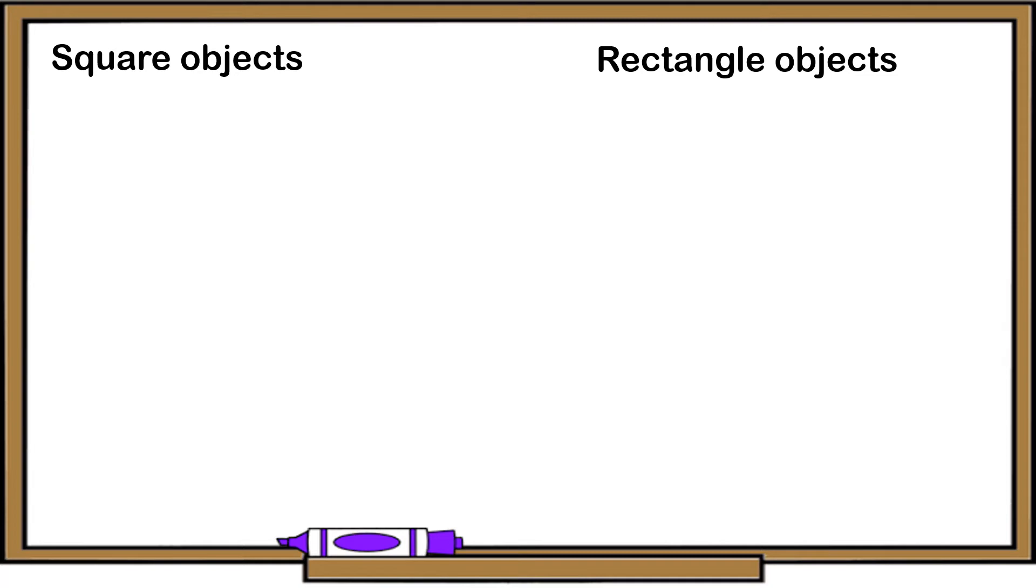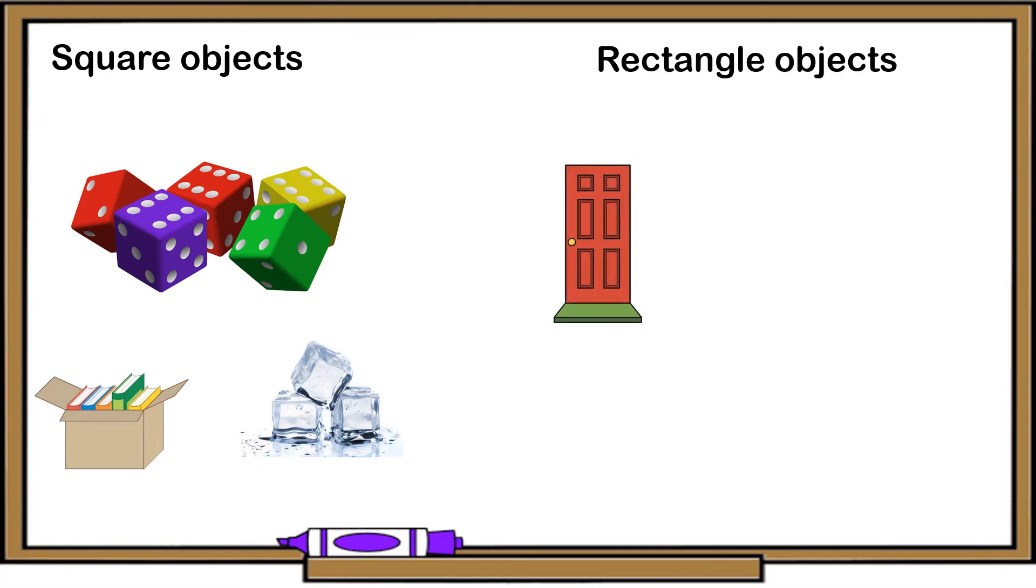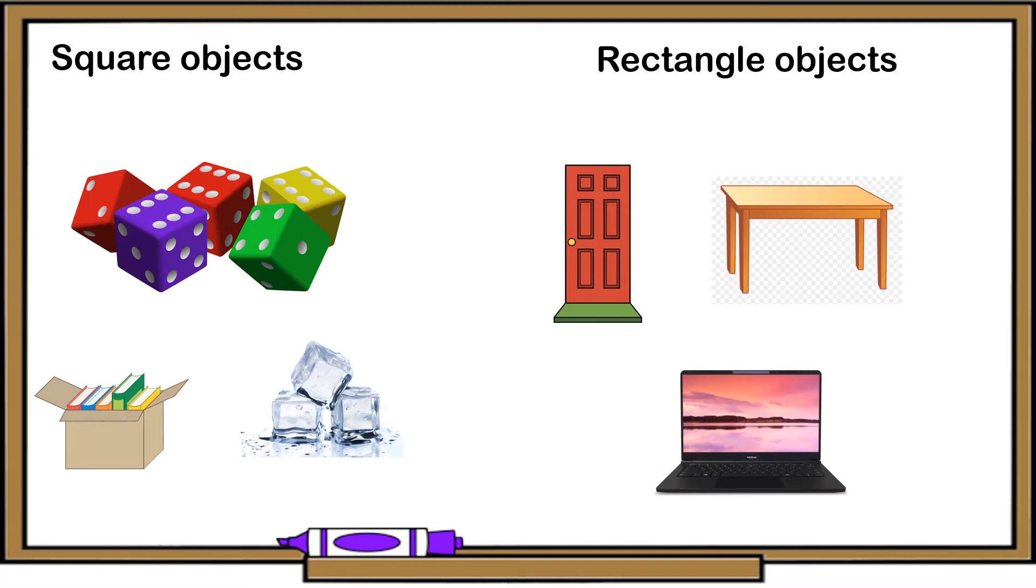Square objects. Here are some examples of square objects. We have dice, box, and cubes. How about rectangle objects? Here are some examples of rectangle objects. Can you name any objects that is a square and rectangle?